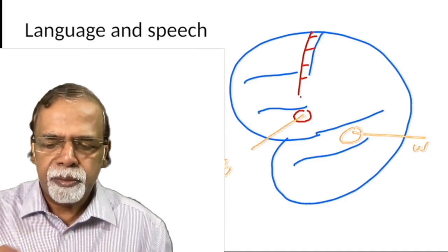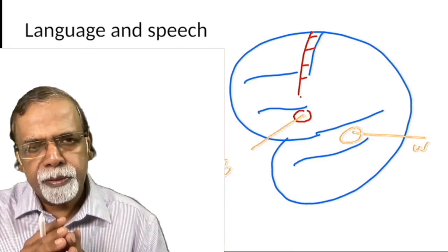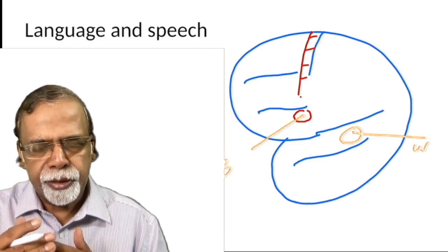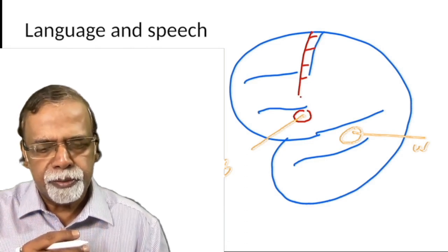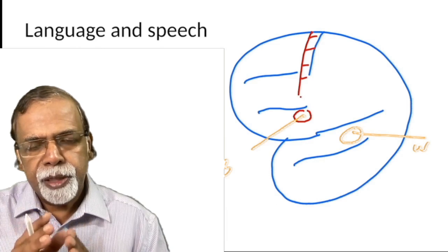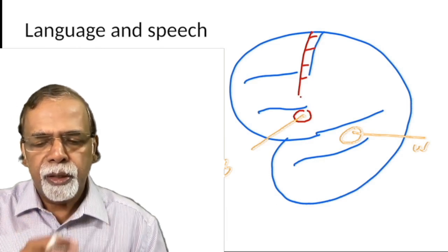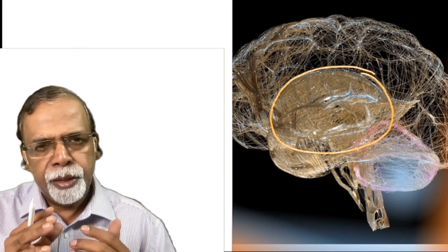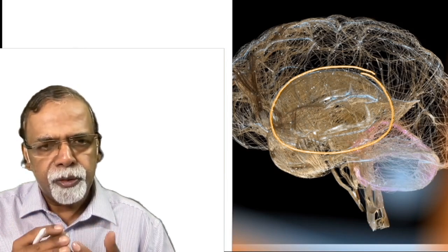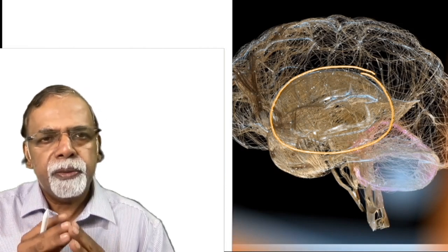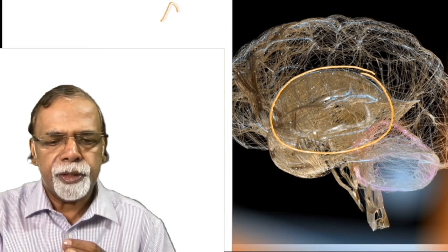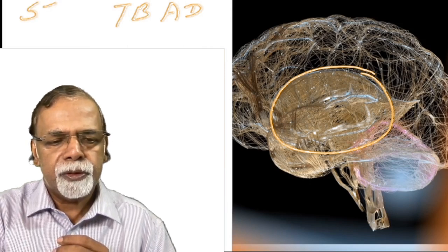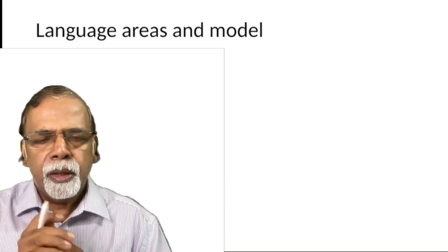When dysfunction occurs to these major speech centers, you get a dysfunction of language. Language is a disorder of communication of ideas using symbols and rules for using them, whereas speech is the vocalization of language. The most important cause of aphasia is stroke. It can also occur following traumatic brain injury, brain tumors, infections, and neurodegenerative diseases like Alzheimer's disease.